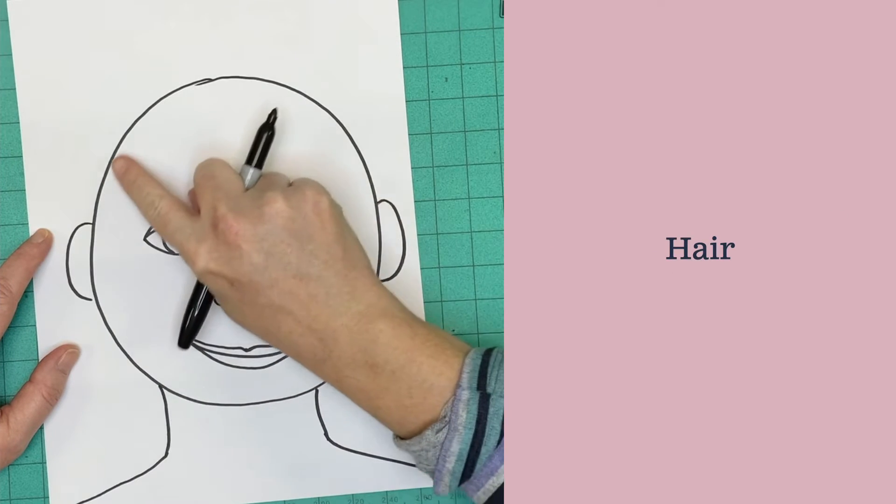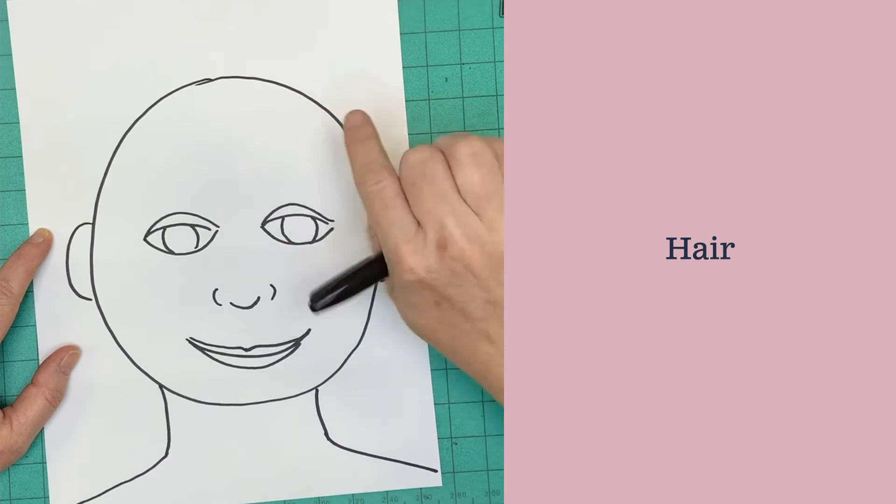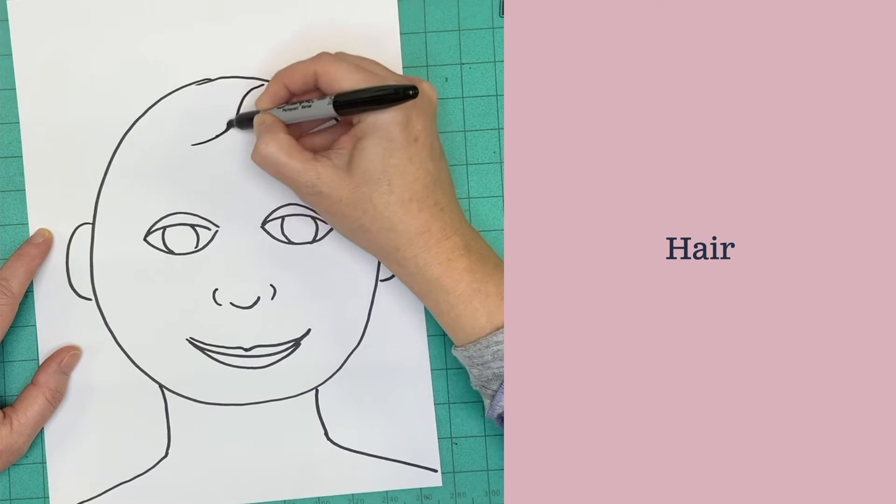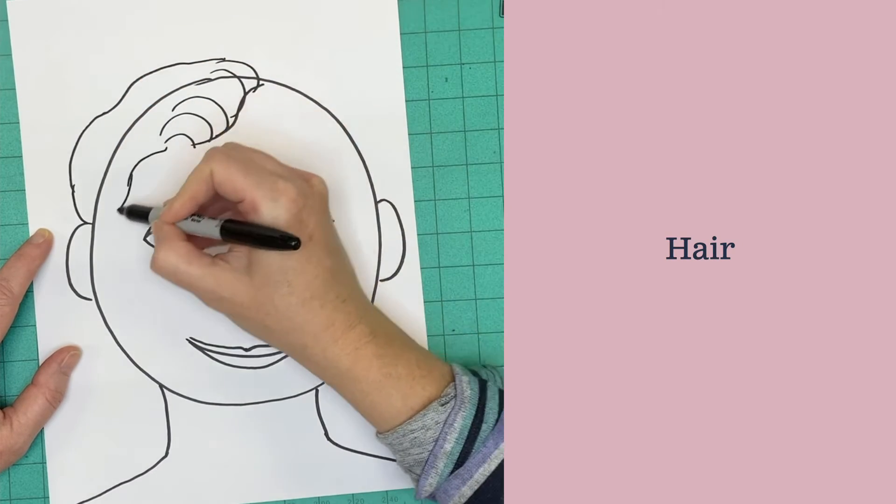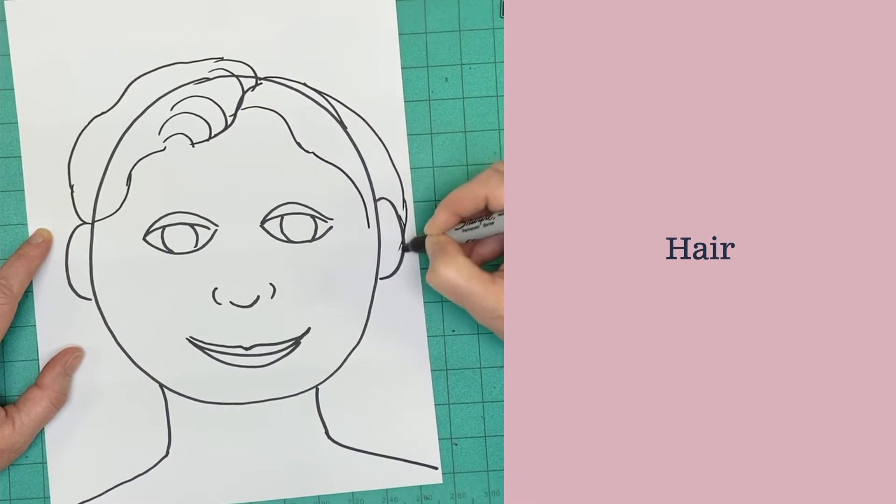Now let's add hair. Hair does not just grow starting at the top of that line, and it doesn't just stay inside of it. I'm going to draw my own hair first. So I'm going to draw some curves and some little curls that come a little bit below my ears.